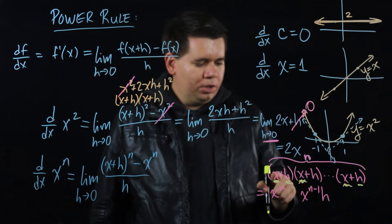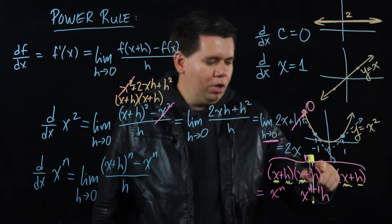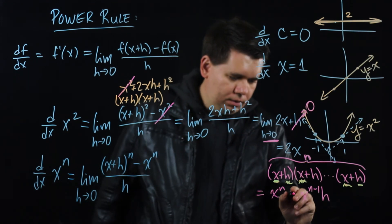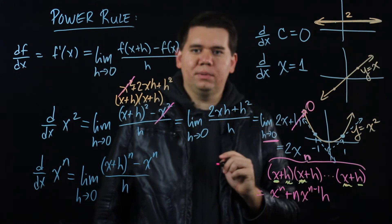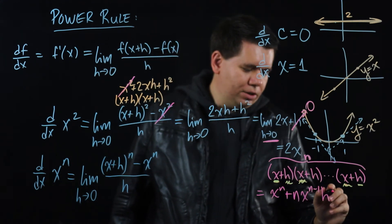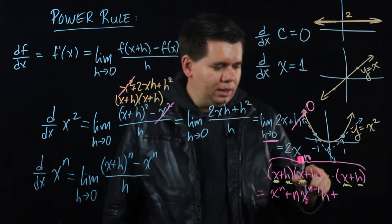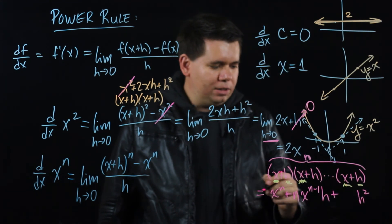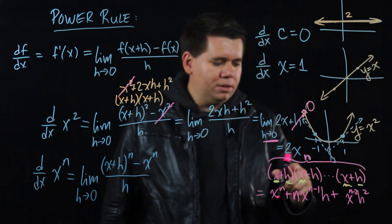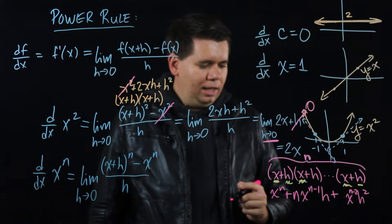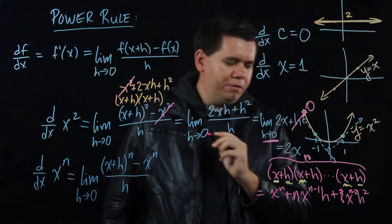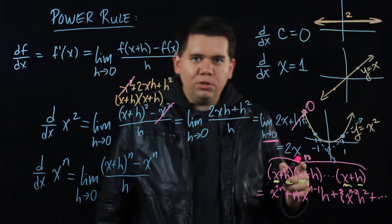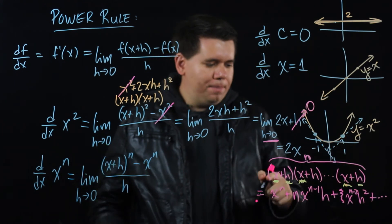But it didn't have to be this last h. You could have picked say this first h and then all the other x's. That also would give you x to the n minus 1, n minus 1 copies of x and an h. And so it turns out there are n different ways of getting x^(n-1) times h, depending on which h you pick. You could pick the second h and all the other x's, or the third h and all the other x's and so on. So there are n different ways to get terms like this. And then it continues in a similar fashion.